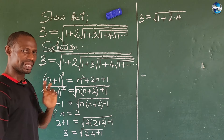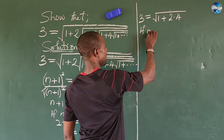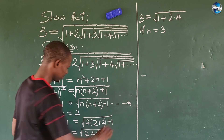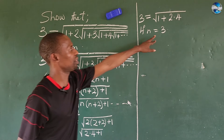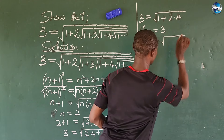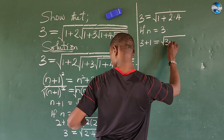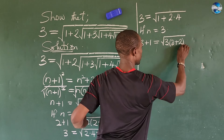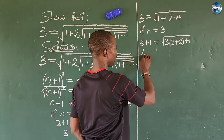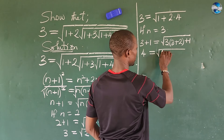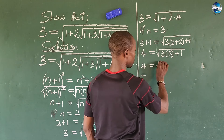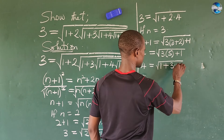Again, let's work for n equal to 3. So if n equals 3, let's call the key identity equation 'star.' From our equation star, if we take n equal to 3, then we have 3+1 equals the square root of 3 into (3+2) plus 1. This gives us 4 equals the square root of 3 times 5, plus 1. So if we rearrange, we get 4 equals the square root of 1 plus 3 times 5.